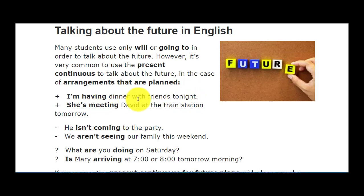Agar 'tonight' na ho, toh agar kohi aap se pooche 'what are you doing now?' — is waqt aap kya kar rahe hain — toh aap kahein ge 'I am having dinner with my friends' — mein apne friends ke saath dinner kar raha hoon. Lekin agar kohi aap se pooche 'what are you having tonight for dinner?' — aaj aap khaane mein kya khaenge, ya kis ke saath khaana khaenge — tab aap use present continuous aur future time marker ke saath beyan karein ge: 'I am having dinner with my friends tonight.'